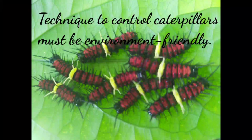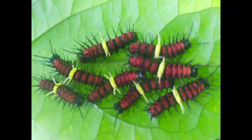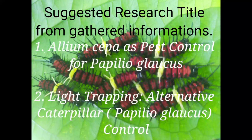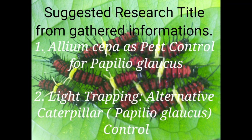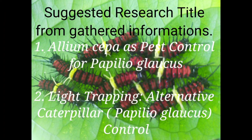Techniques to control caterpillars must be environment-friendly. In formulating your research title, consider the following questions: Are there locally available plants or organisms that can be utilized to eliminate the pest? What are your bases for considering such plants or organisms? What methods will you use to carry out your experiment? Do you have related studies to choose the most feasible method? If your answers are mostly yes, then you can possibly materialize your scientific study.